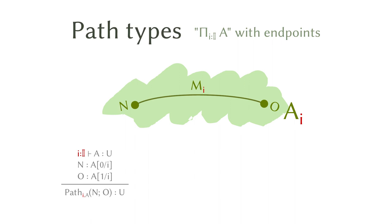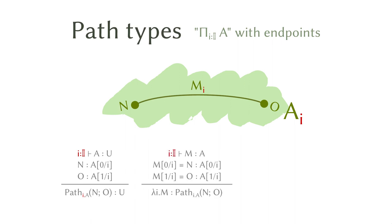So that's the formation rule. The next one is how to construct an element in a path. Suppose you have an element M that is indexed by I, and the 0 endpoint is N and the 1 endpoint is O — then you have a path. We are going to just recycle the lambda notation here, because it's really just a function except that the domain is the standard interval. So we're going to use a lambda symbol to construct the element in the path type.